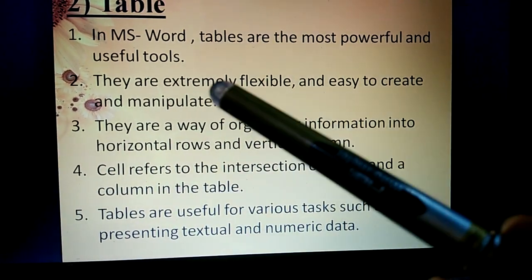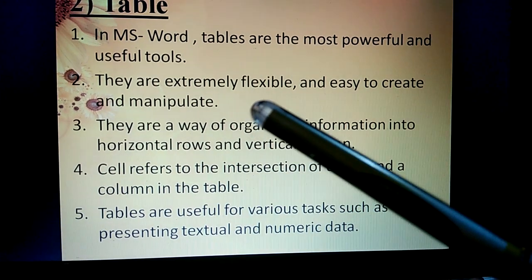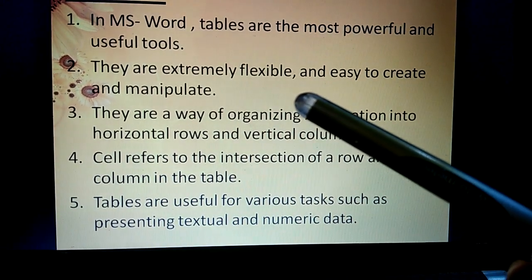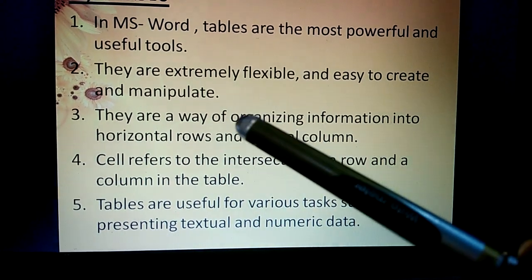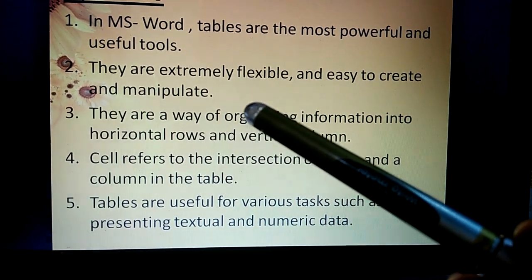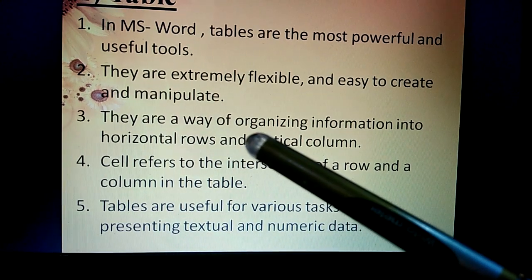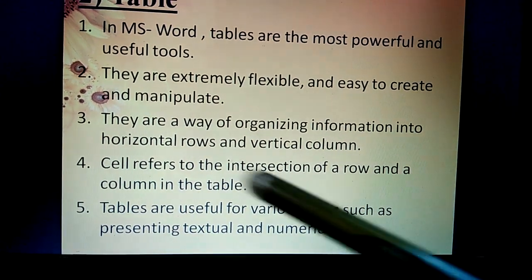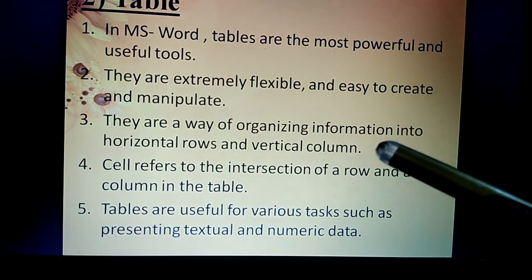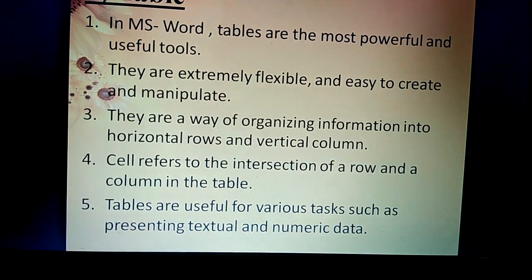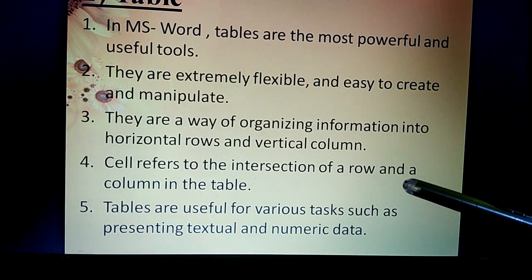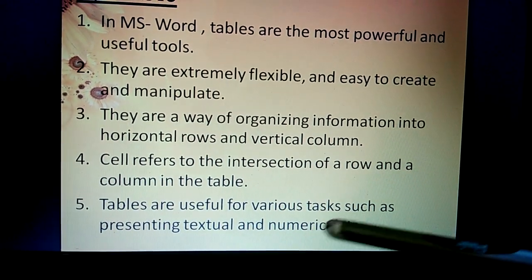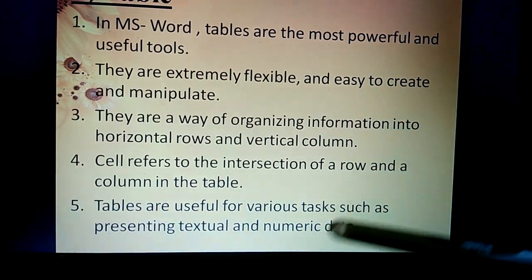To summarize: tables are the most powerful and useful tool, extremely flexible so we can change the size, and easy to create and manipulate. They organize information into horizontal rows and vertical columns. Cells refer to the intersection of rows and columns, and tables are useful for presenting textual and numeric data.